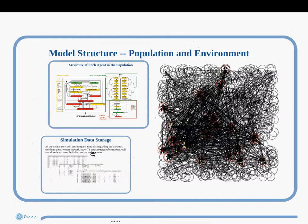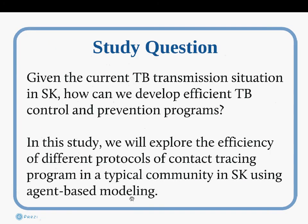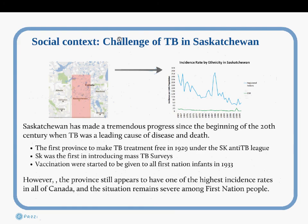Active TB cases are tracked down by health authorities after being diagnosed. They're asked about who their contacts were, and once contacts are elicited, health authorities go and try to find those contacts and test them for infection. This is a very laborious process.